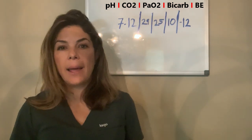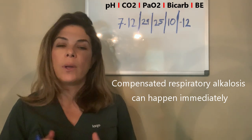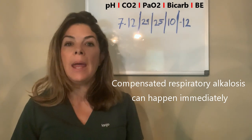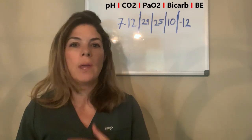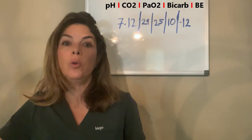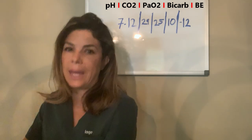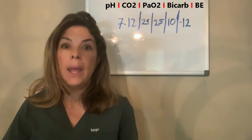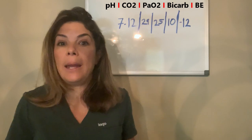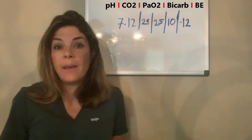A compensatory respiratory alkalosis can happen immediately — it's different from a compensatory metabolic alkalosis. For example, if the baby suddenly has an increased CO2 due to secretions in their endotracheal tube, the bicarb isn't suddenly going to rise to compensate. The CO2 has to be elevated for a long time for the kidneys to start retaining bicarb. With a metabolic acidosis, however, almost immediately the baby can start breathing faster to get rid of that carbon dioxide.